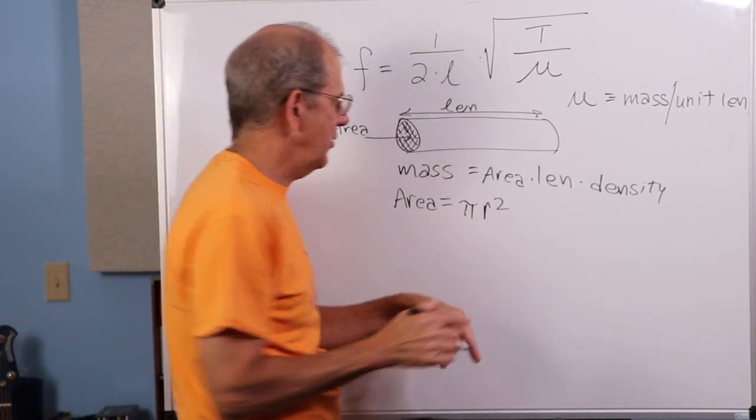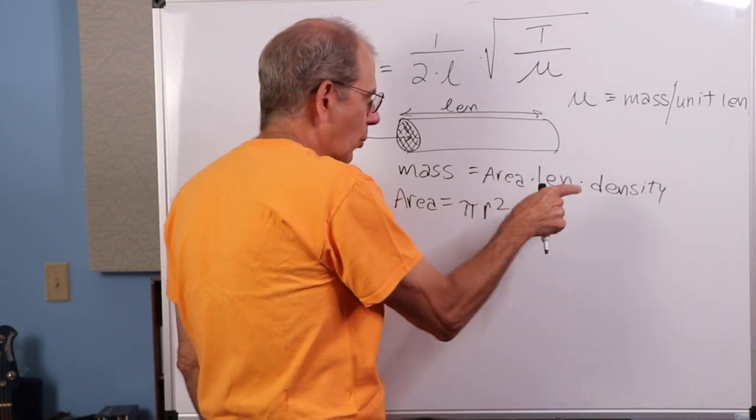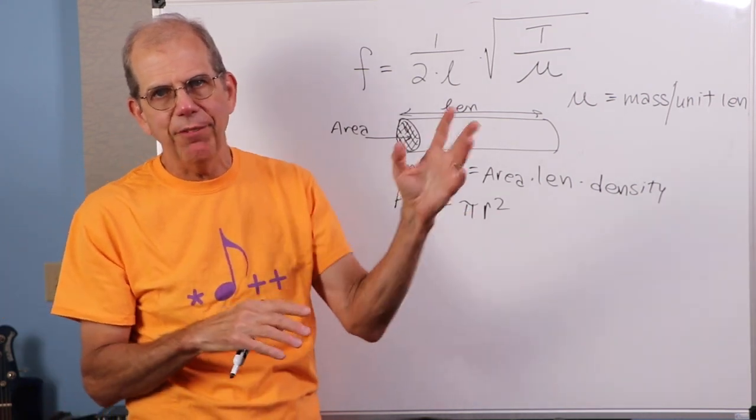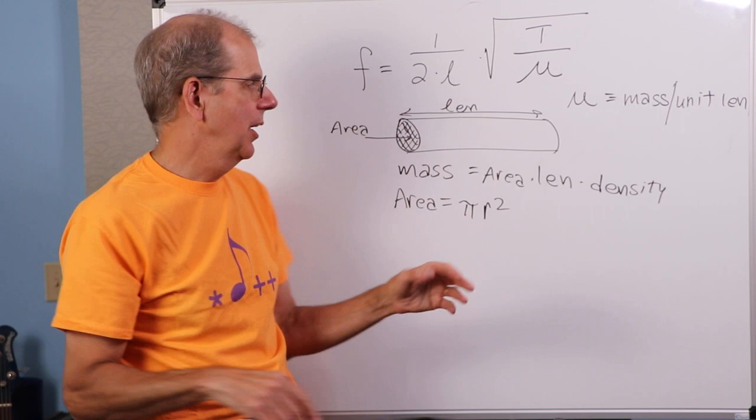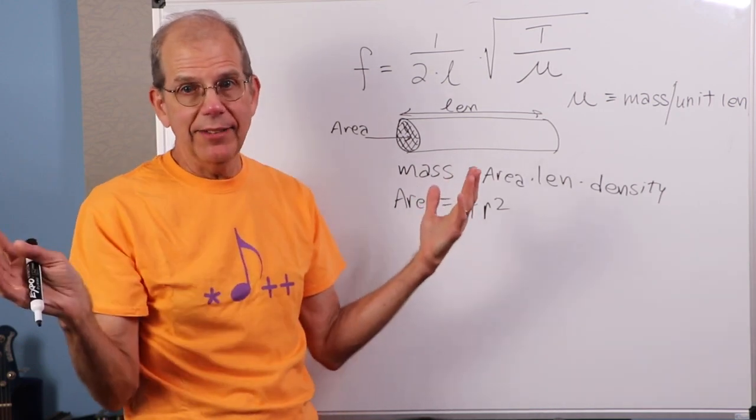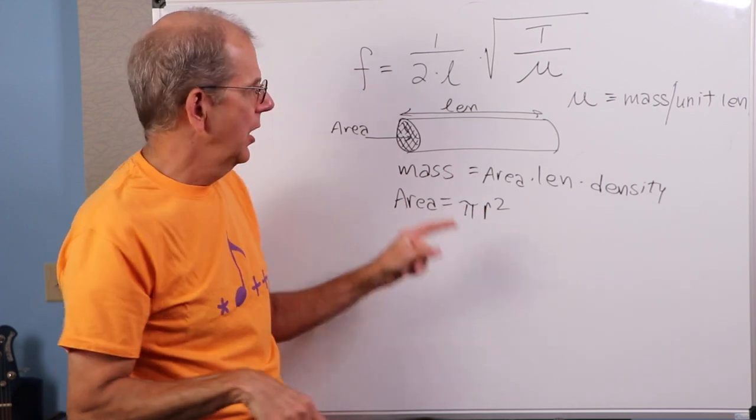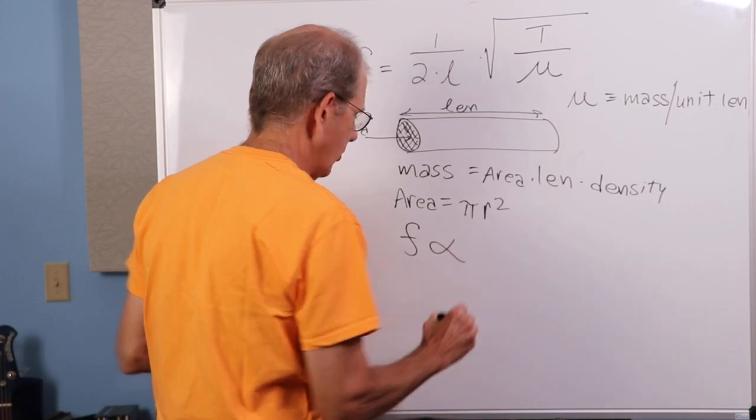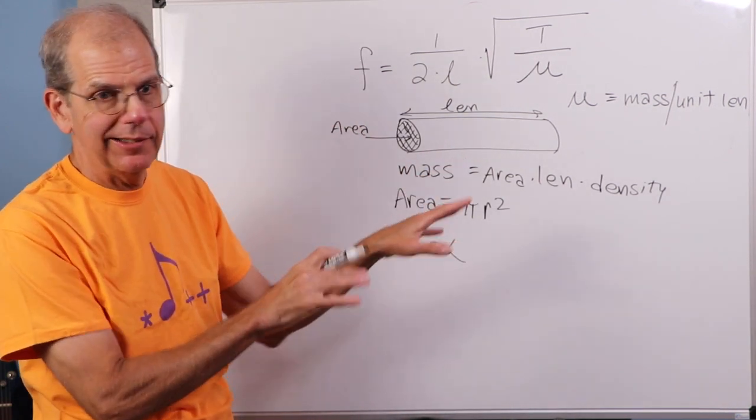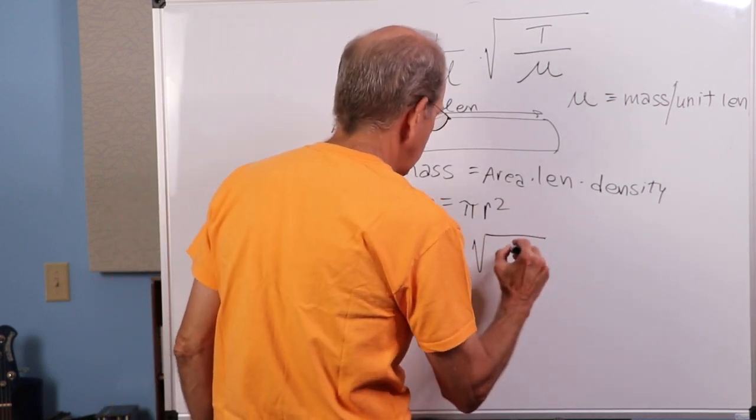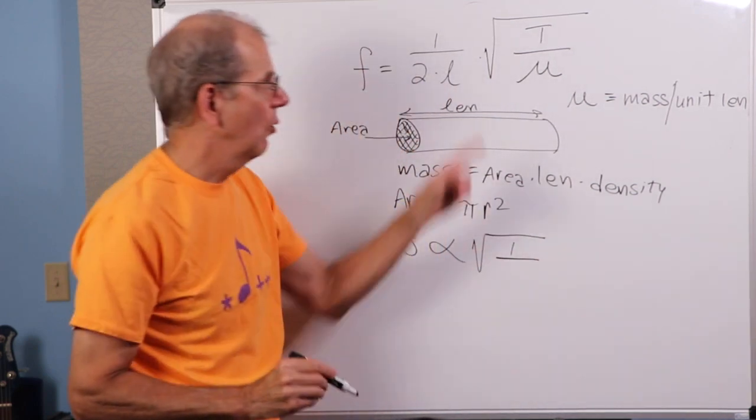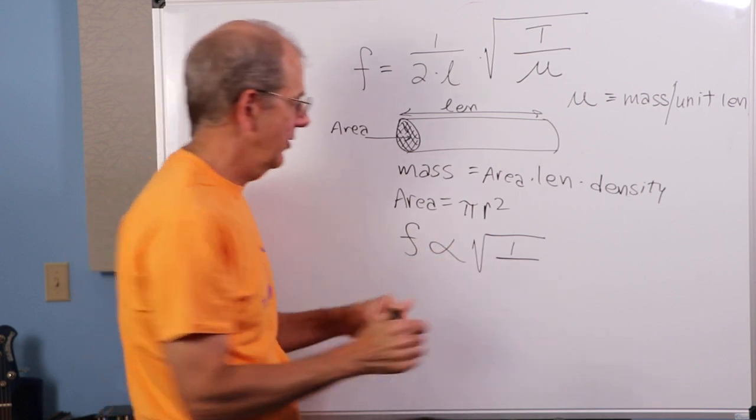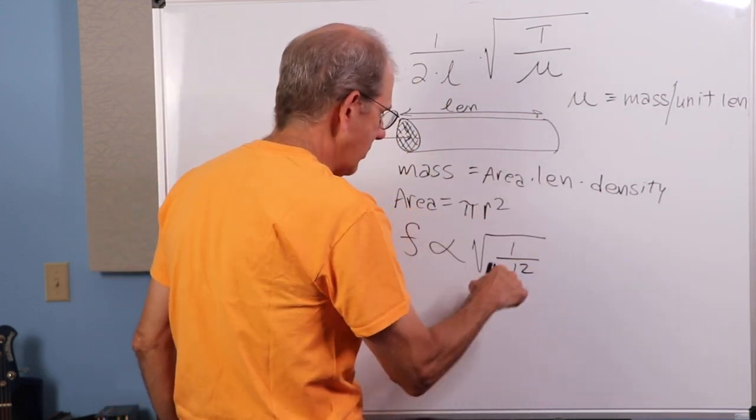So, mu over here, mass per unit length. When we look at that, this is what my mass is: area times length times density. The unit length typically would be in metric, would be a meter. I would do the same thing over here. Those meters cancel. The area of the cut face of the string is going to be pi times the radius squared. And remember, radius is just half your diameter. The diameter is equal to 2r.